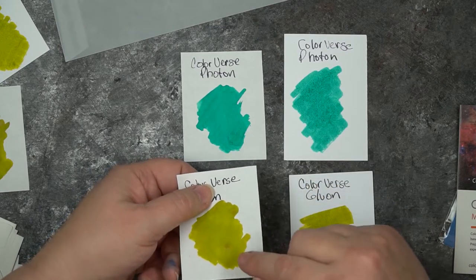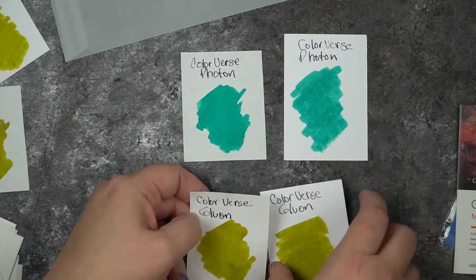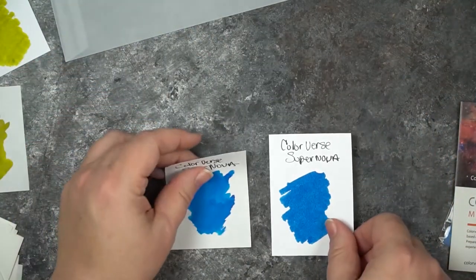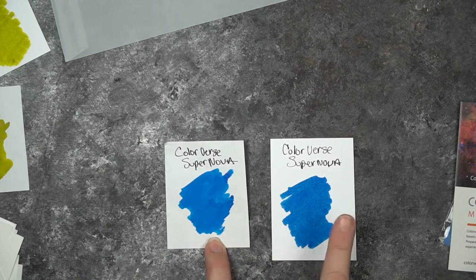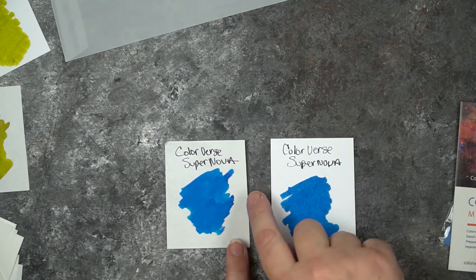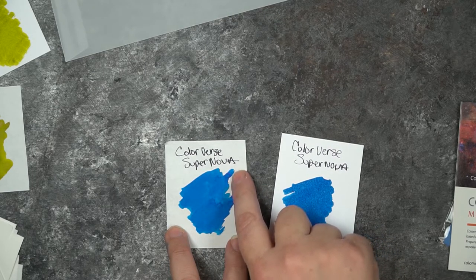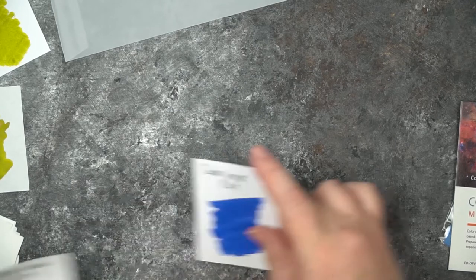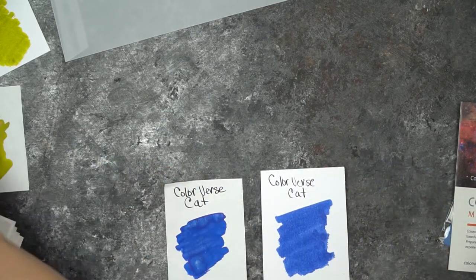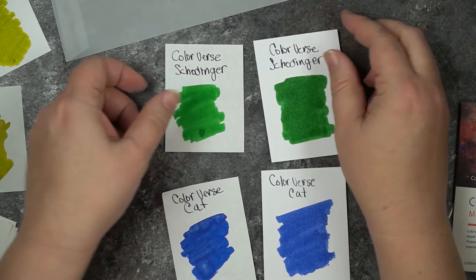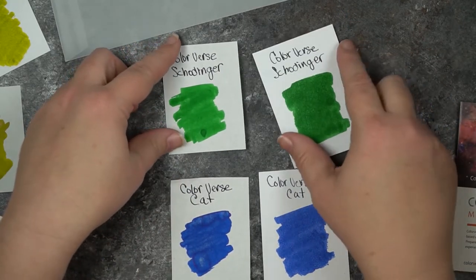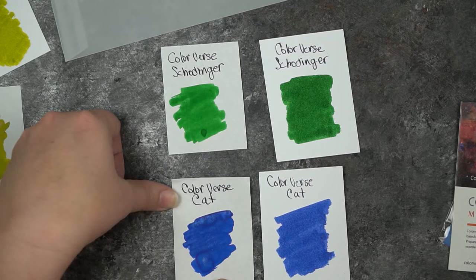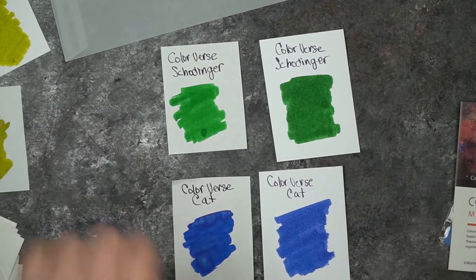So this is the Colorverse, the Photon Gluon. Again, Tomoe River paper and then just straight card stock. I can pick up some of the shimmer right there in the edge. The Supernova, gorgeous color. Very, very wet ink. You can see some sheening right there. There's some red. This one sheens red. This is the Schrodinger's Cat. This was just a really nice kind of green color. This one, I think it looks like it shifts red as well. A little bit different than Supernova. It's more of a blue. This kind of reminds me of the Bay State Blue from Noodler's.